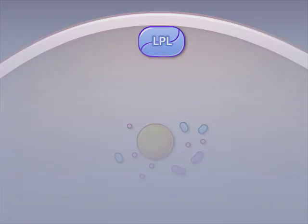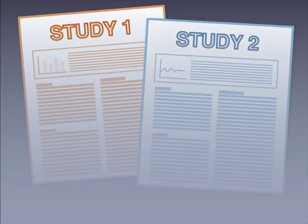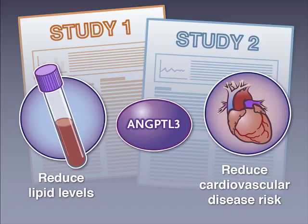The protein angiopoietin-like 3 inhibits lipoprotein lipase, an enzyme that degrades lipoproteins. Two new studies demonstrate that this protein is an experimental target for therapy to reduce lipid levels and cardiovascular disease risk.